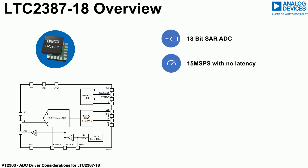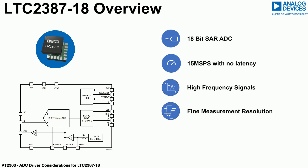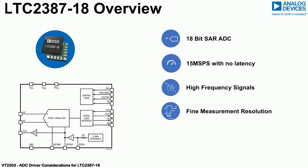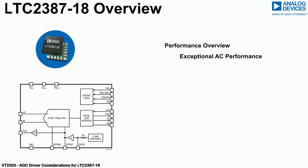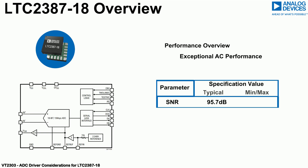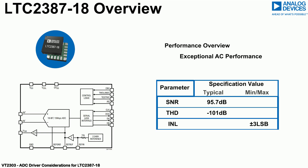A sampling rate of 15 mega-samples per second can provide benefits in closed-loop systems, systems measuring high-frequency signals, or where a fine time resolution is required when profiling signals in the time domain. The LTC 2387-18 has Nyquist sampling up to 7.5 MHz, delivers SNR up to 95.7 dB, THD performance up to minus 101 dB, and specifies 3 LSB maximum INL performance.